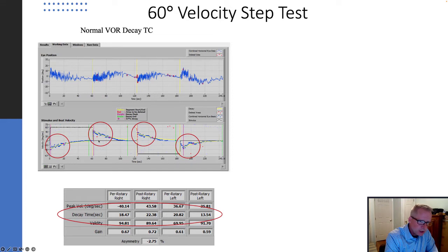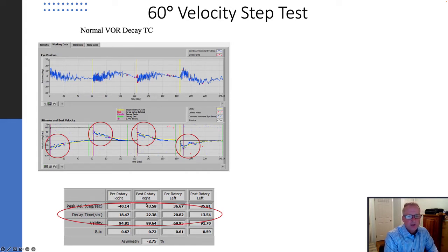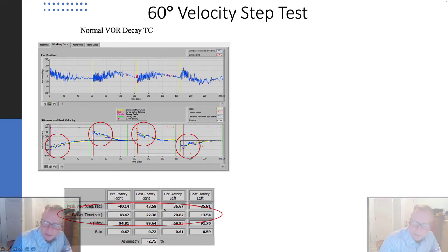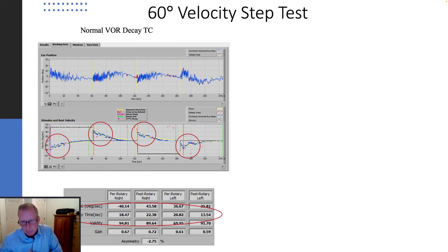You have that for both the acceleration, the deceleration, the acceleration to the left, and of course the deceleration. So you actually produce four time constants in relation to the cupular mechanics driven based on acceleration to the right and to the left. These all exceed 10 seconds, so the velocity storage mechanism is appropriately storing that neural response and expelling it slowly over time.